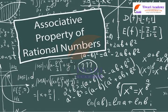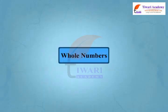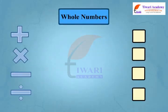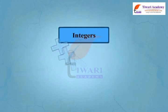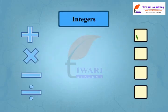Let us learn the associative property of rational numbers. We know whole numbers are associative under addition and multiplication but not under subtraction and division. Similarly, integers are associative under addition and multiplication but not under subtraction and division.